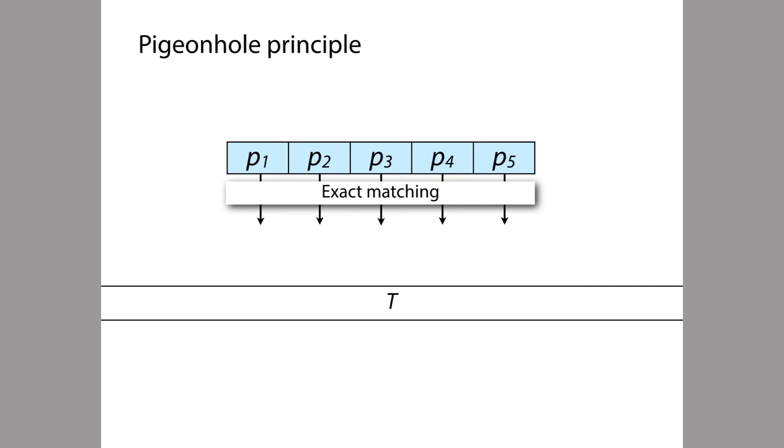So here's an illustration that shows the whole process. So let's say we've divided P into five partitions, perhaps because we're looking for occurrences of P that have up to four edits. And next thing that we'll do is we'll use an exact matching algorithm, any exact matching algorithm, to find exact occurrences of each of these five partitions within T.